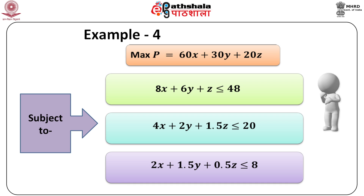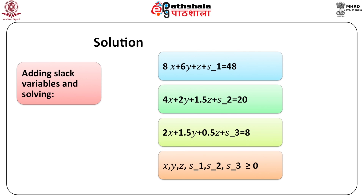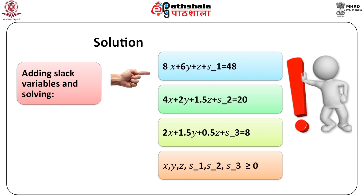Example 4. Maximize p equal to 60x plus 30y plus 20z subject to: 8x plus 6y plus z less than or equal to 48; 4x plus 2y plus 1.5z less than or equal to 20; 2x plus 1.5y plus 0.5z less than or equal to 8. Solution. Adding slack variables: 8x plus 6y plus z plus s1 equals 48; 4x plus 2y plus 1.5z plus s2 equals 20; 2x plus 1.5y plus 0.5z plus s3 equals 8.